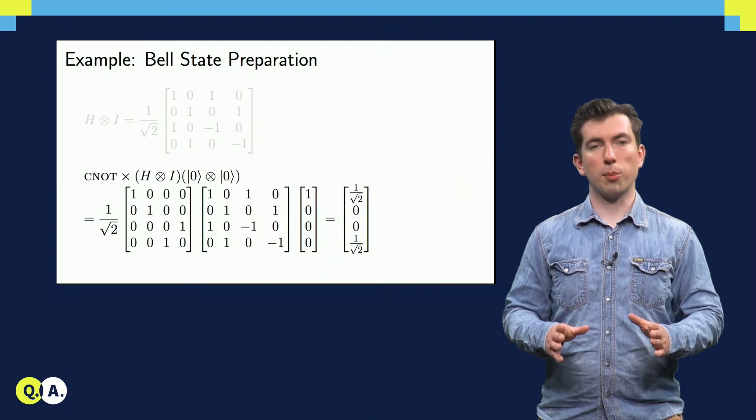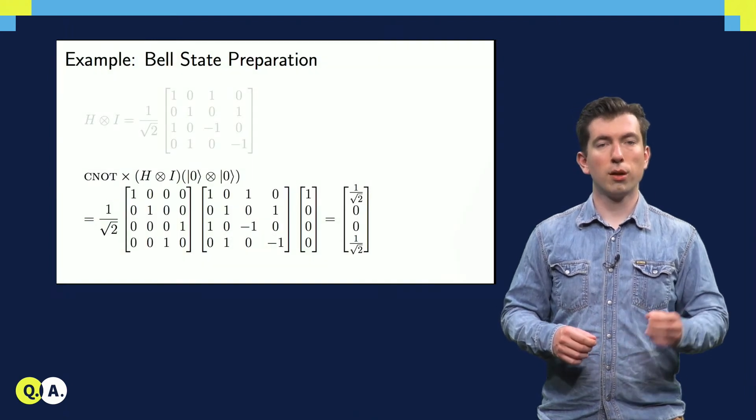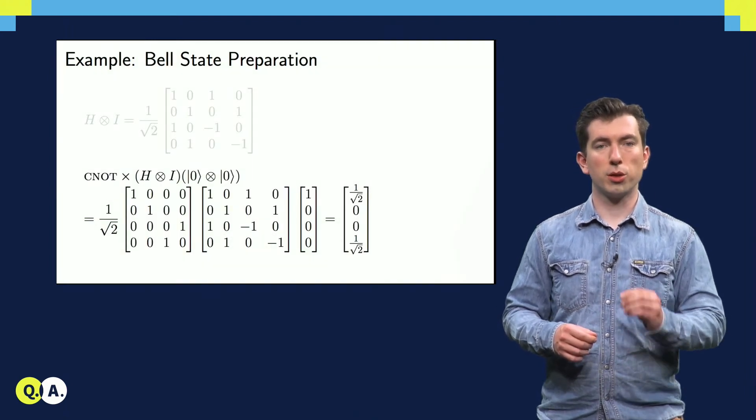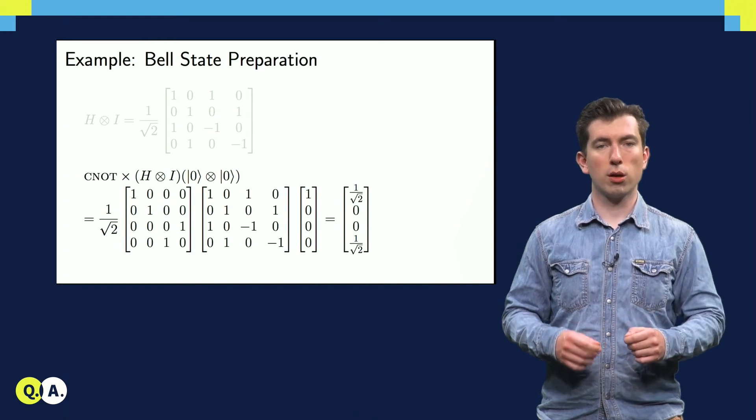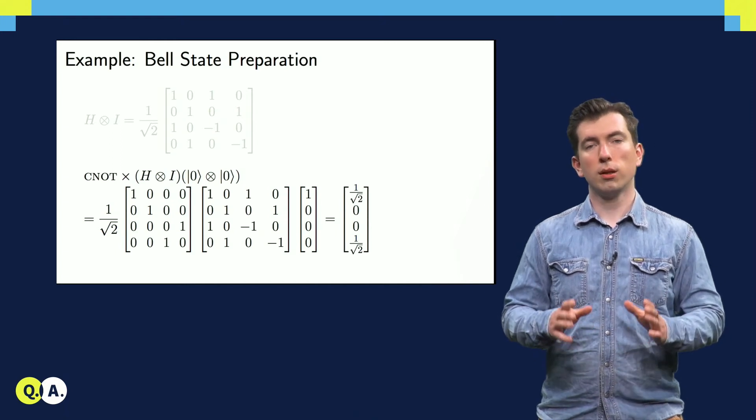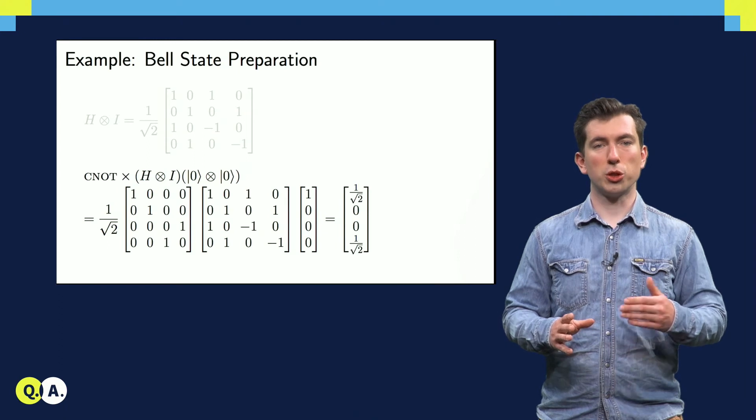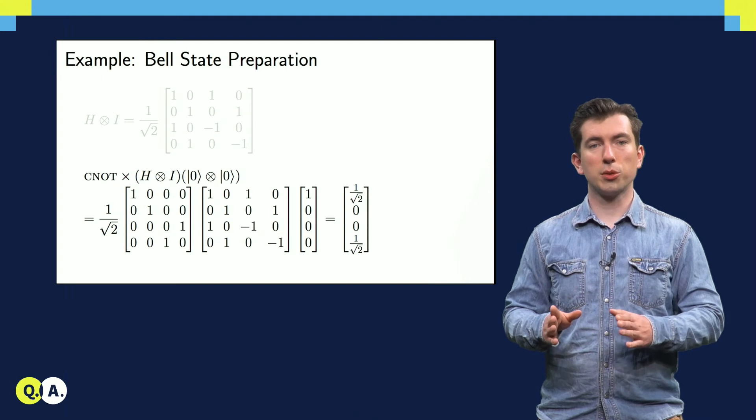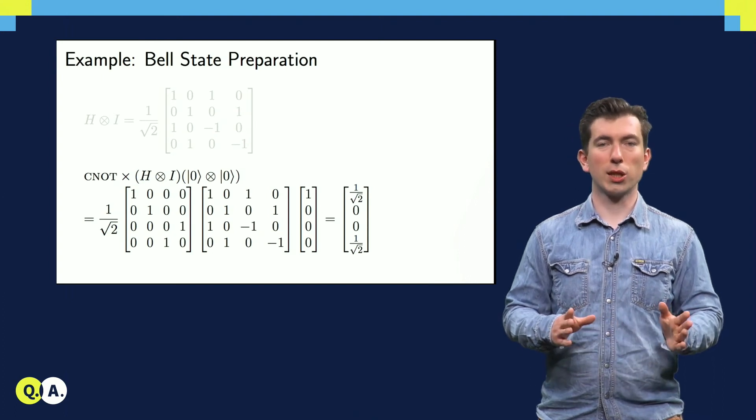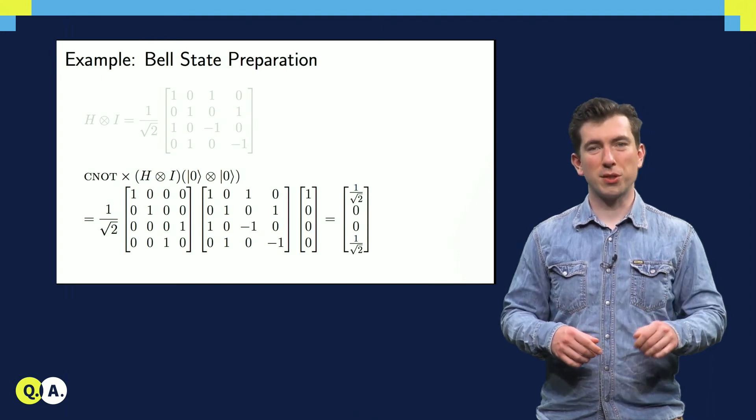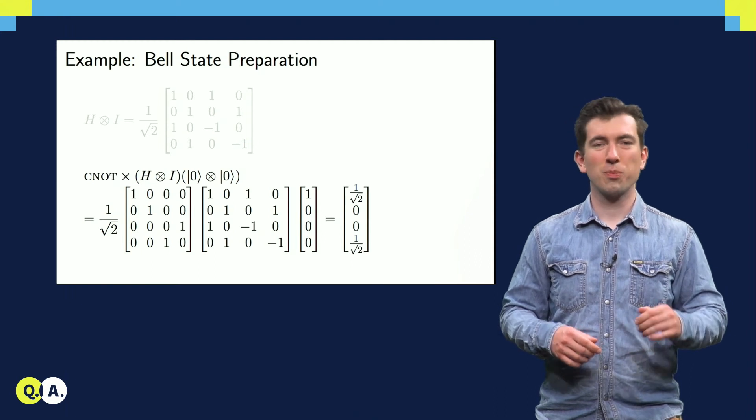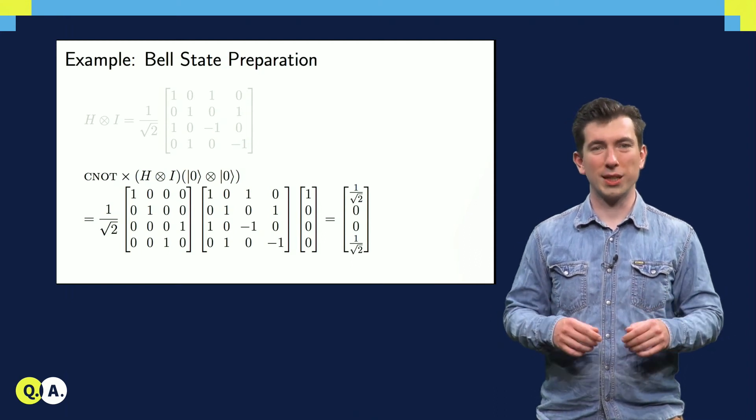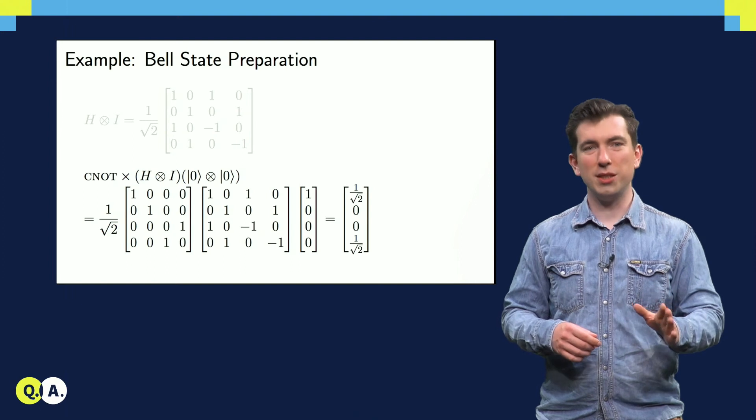Now we're ready to set up our sequence of operations. First, we prepare the state, then we apply the Hadamard, then the CNOT. This results in a Bell state, which is written out here as a column vector. Now this is the correct answer, but it's a little tedious to come to, and the matrices involved are a little large. 3x3 matrices are typically big enough for any physicist, so 4x4 is overdoing it a little. Let's try and do it the easy way, using some more ket notation.